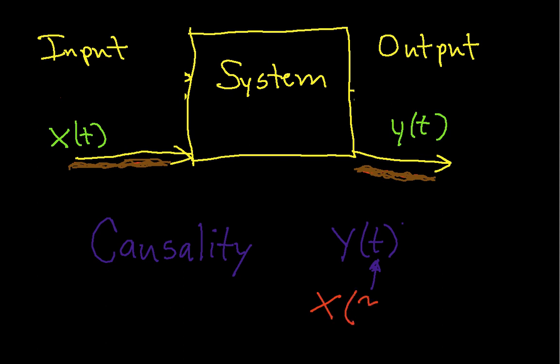for values of tau, where tau is a Greek letter that we use a lot, less than or equal to T. So this is the mathematical way of saying that something is causal.